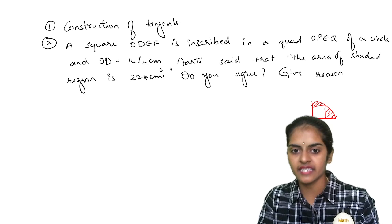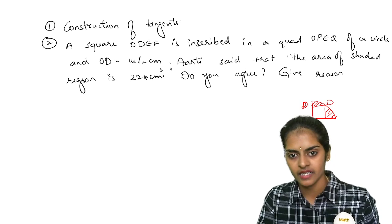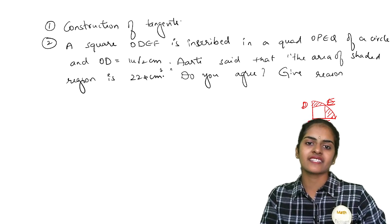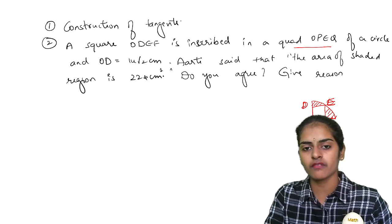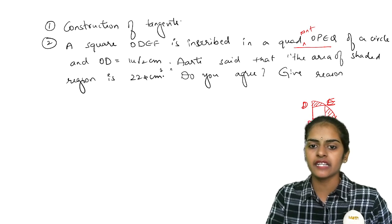So square ODEF, this is ODEF, let this be ODEF. Inscribed in a quadrilateral, this is the quadrant of a circle. This is quadrant OPEQ.